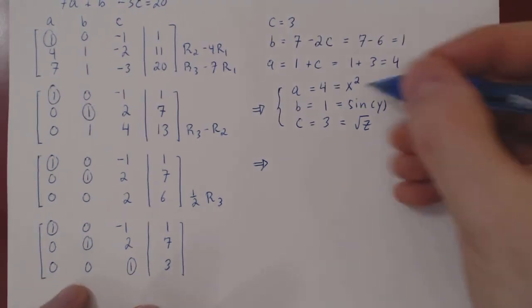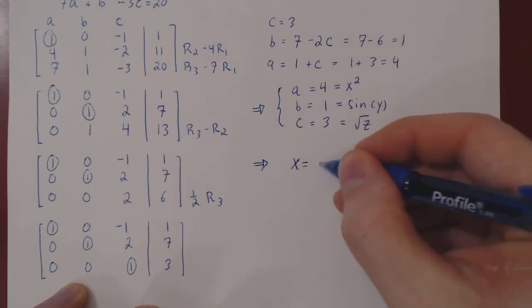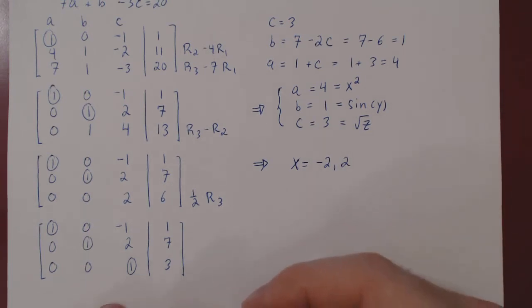Well, if x squared equals 4, then there are two possible values for x. x is either negative 2 or positive 2. And that's it for x.